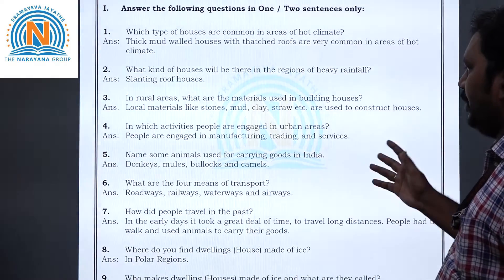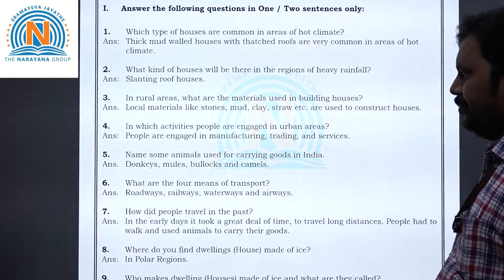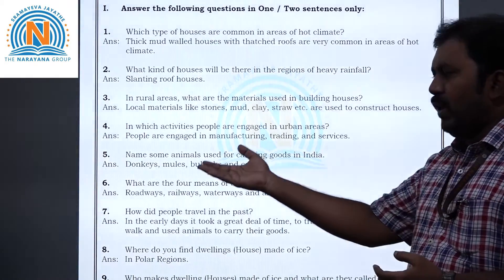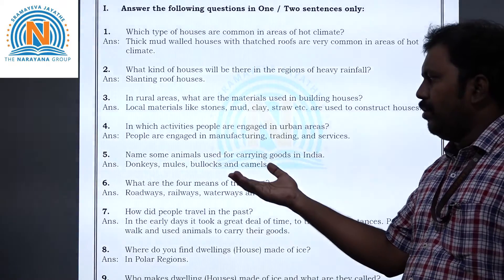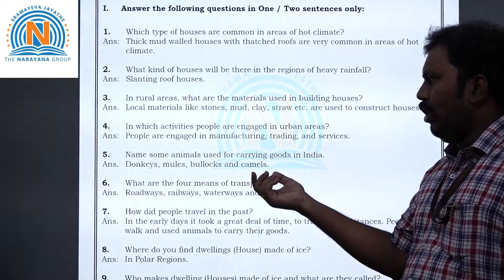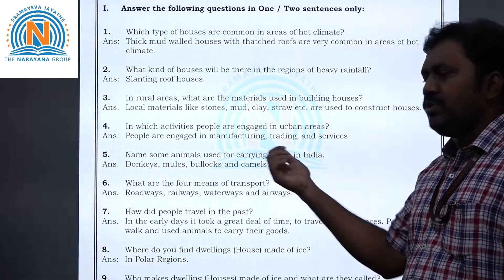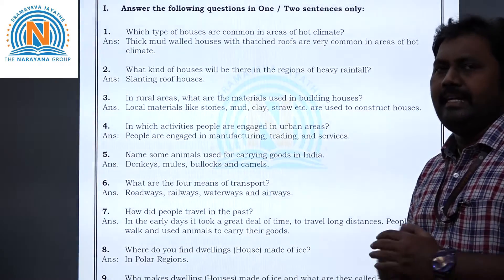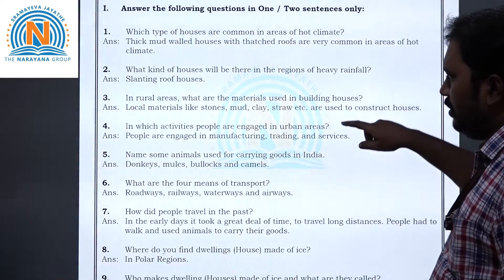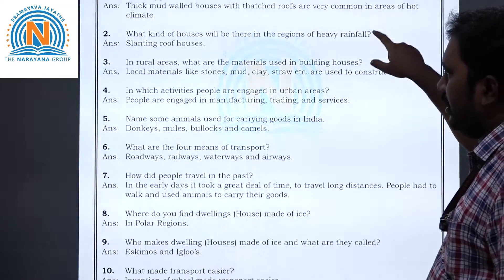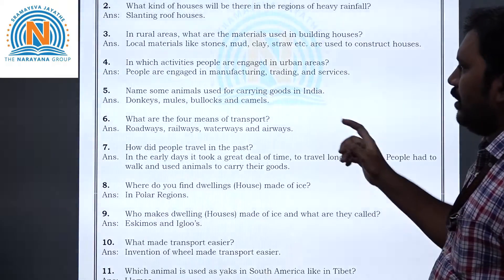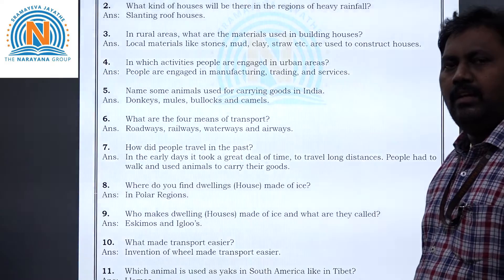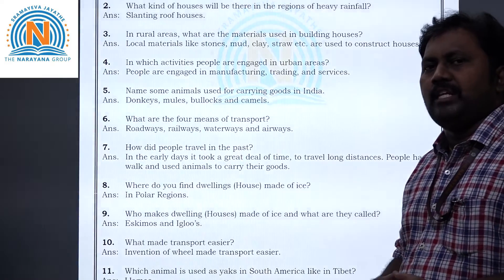Question 5: Name some animals used for carrying goods in India. Animals like donkeys, mules, bullocks and camels are used for carrying goods in India.